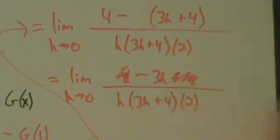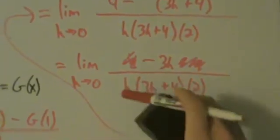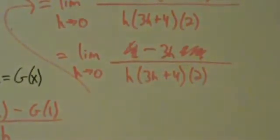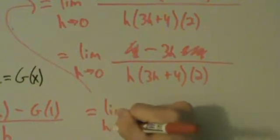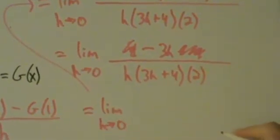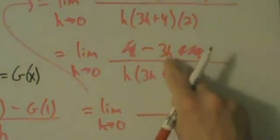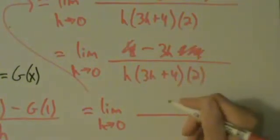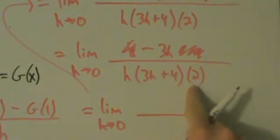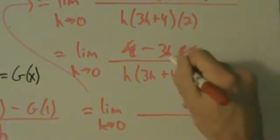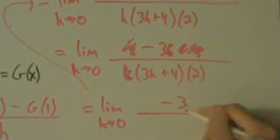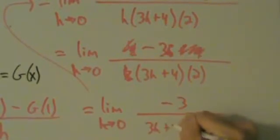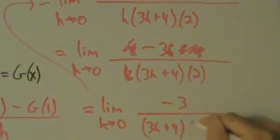And now what we have is, let's erase this narrow line that I drew for some reason. Now we have equals the limit as h goes to 0 of -3h over h·(3h+4)·2. So actually, this h we can now cancel with this h. So all we have left is -3/(3h+4)·2. Alright.